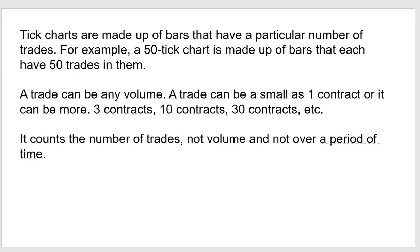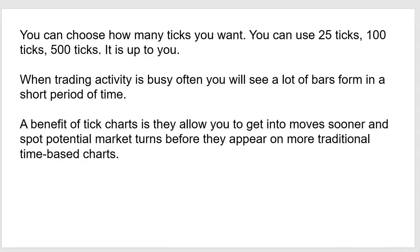A 50-tick chart is made up of bars that each have 50 trades in them. A trade can be any volume — as small as one contract, or three, ten, thirty, or a hundred contracts. On a volume-based chart, say you're trading wheat with a 100-volume chart and 200 contracts trade — that would go over into two bars. But on a tick-based chart, a 100-contract trade counts as only one trade. You're looking at the number of trades, not the volume, and not a period of time.